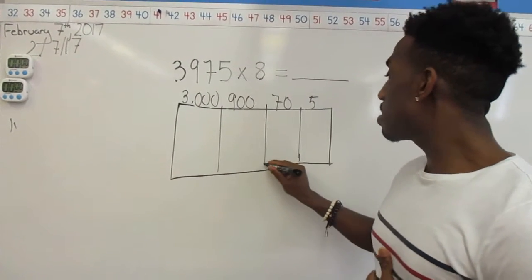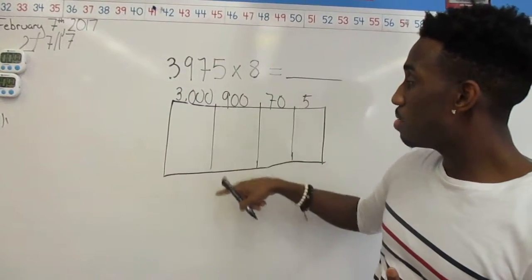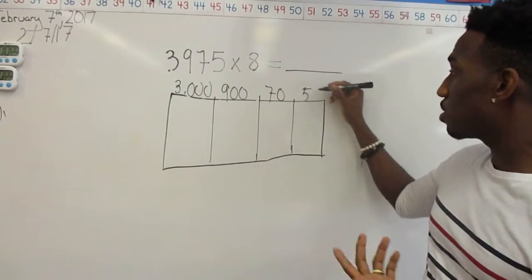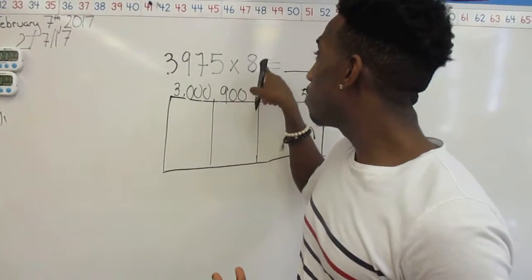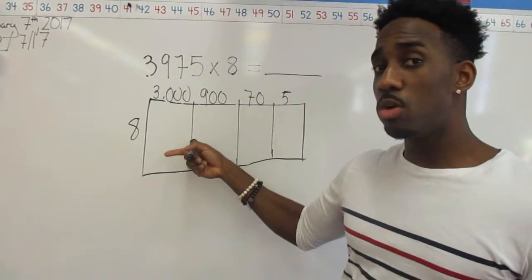And it's called the area model because, as we know, area is length times width. So all I'm going to do is multiply the length times the width of each individual rectangle. It's going to make it a little bit easier for us to multiply. My other number, I'm going to put it as the other side length. Now I'm going to just multiply.